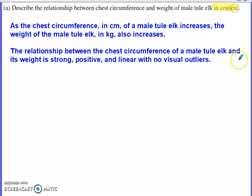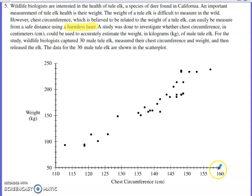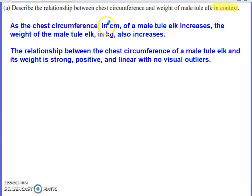It's definitely something you should be in the habit of doing within your AP Stats verbal responses. I realized right away that if we look at that scatter plot, as the chest circumference increases, the weight of the deer is also increasing. So as chest circumference measured in centimeters of a male tule elk increases, the weight of the male tule elk in kilograms also increases. Now, that's not going to cut it if you're asked to describe a relationship in a scatter plot.